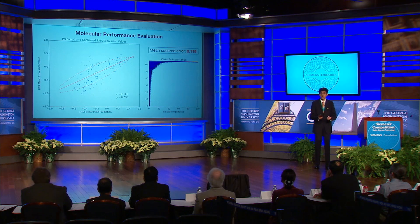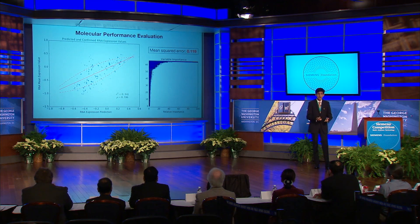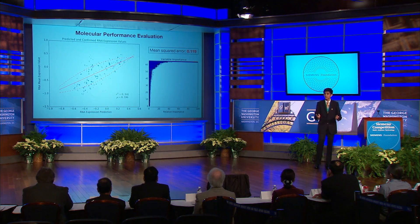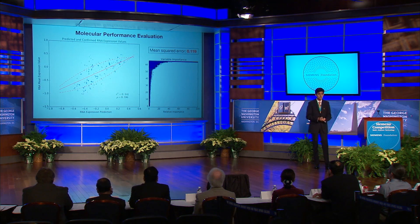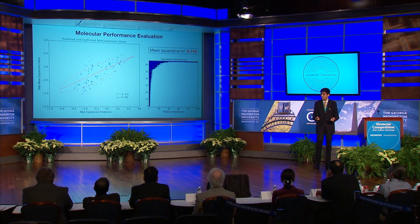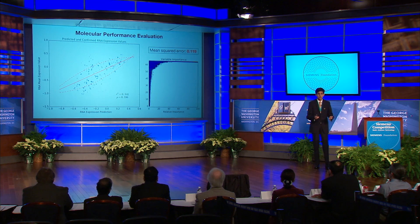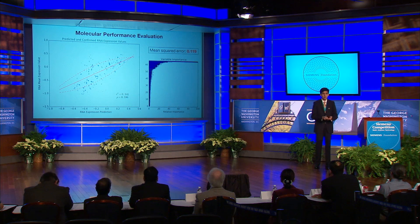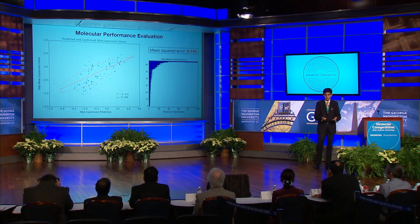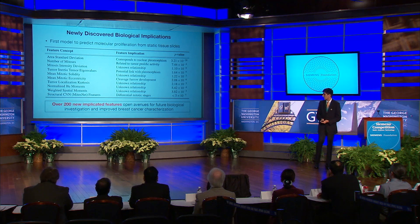My model not only performs pathologist-level categorical prediction, but also provides insight into the molecular expressions behind tissue images, making it the first ever to perform such a task. Its low mean squared error of 0.119 and high Spearman's Rho coefficient of 0.596 with true expression values indicate its prognostic potential, defining a new gold standard for computational biology.